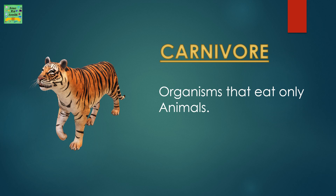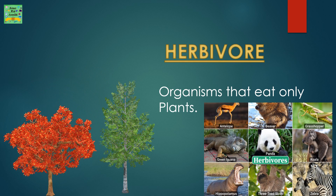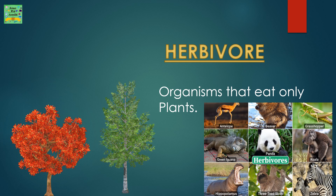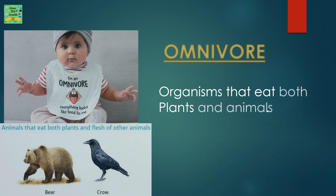Carnivore: organisms that eat only animals. Herbivore: organisms that eat only plants. Omnivore: organisms that eat both plants and animals.